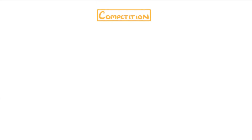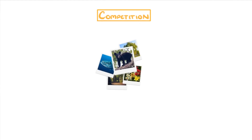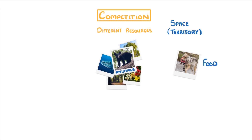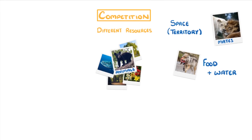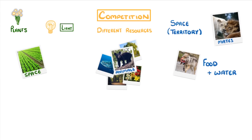One of the most important processes in an ecosystem is competition. If you think about any organism, it's going to need a range of different resources to survive. For animals, this usually includes things like space (which we can call territory), food, water, and also mates, so that they can reproduce. Meanwhile, plants need things like light, space, and water and mineral ions, which they get from the soil.